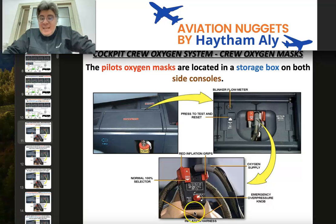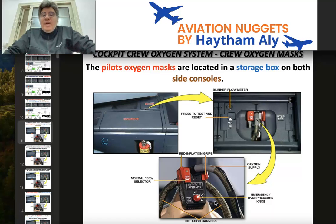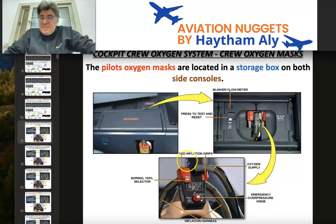Each quick donning mask has a regulator assembly. This regulator assembly consists of red inflation grips that allow for quick donning and quick release. When you press the red inflation grips, oxygen goes into the inflation harness, allowing the user to don or release the mask using only one hand. The regulator also has a normal and 100 percent selector, and an emergency overpressure knob.